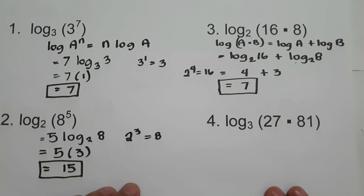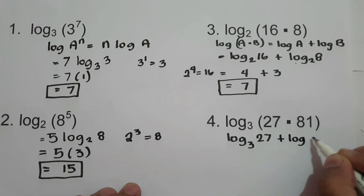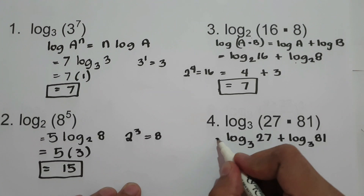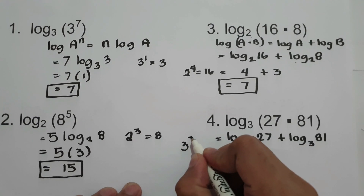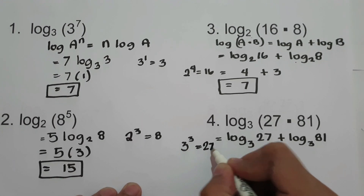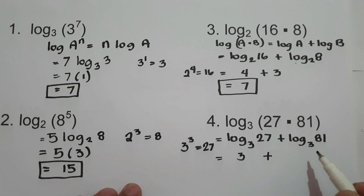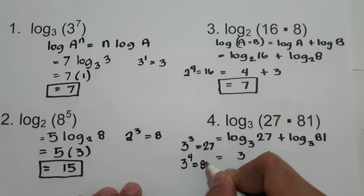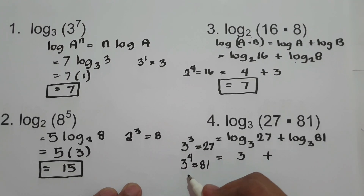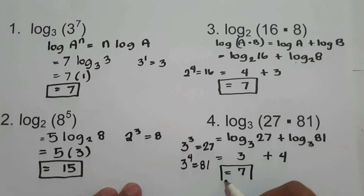For number 4, simplify log 27 base 3 plus log 81 base 3. For log 27 base 3: 3 to what power is 27? We know 3 raised to 3 equals 3 times 3 times 3, which is 27. So log 27 base 3 is 3. For log 81 base 3: 3 raised to 4 equals 3 times 3 times 3 times 3, which is 81. So log 81 base 3 is 4. Therefore, 3 plus 4 is 7.